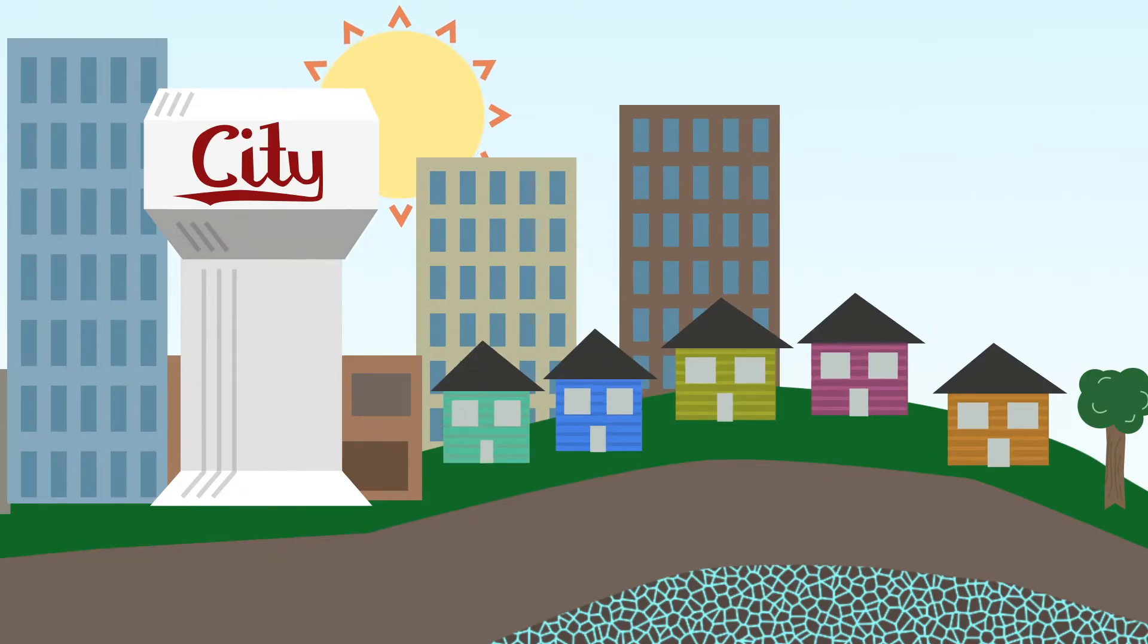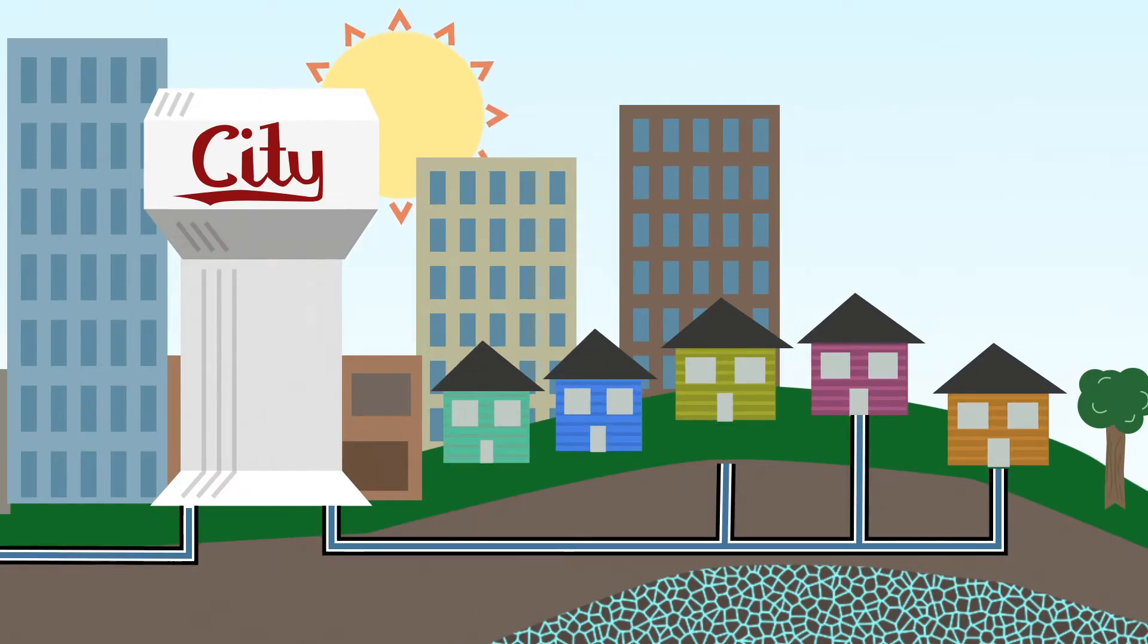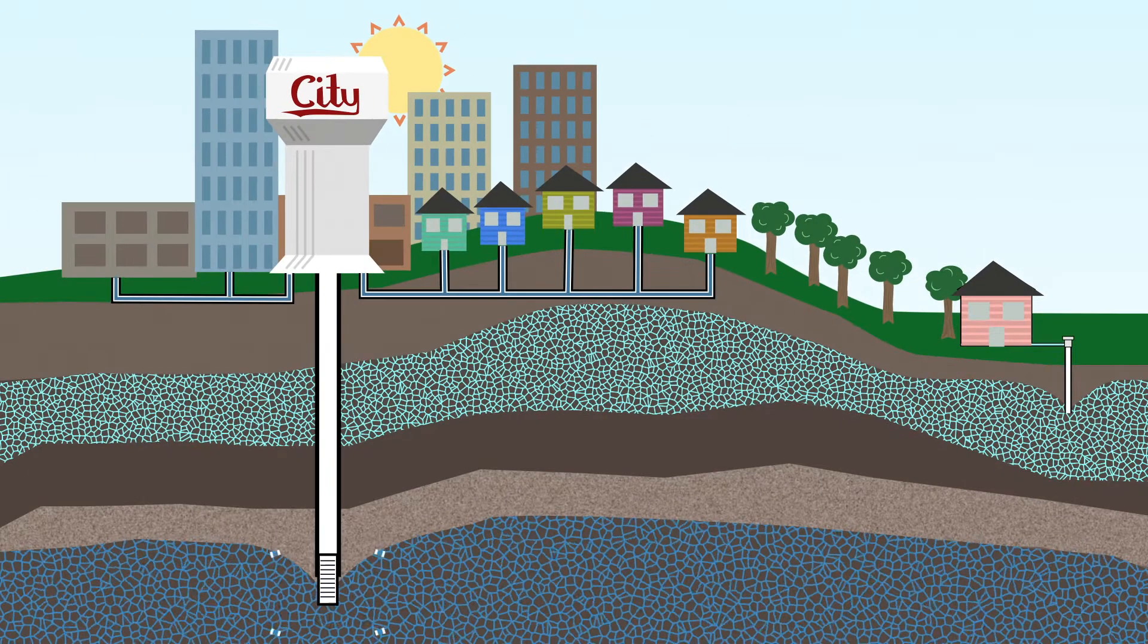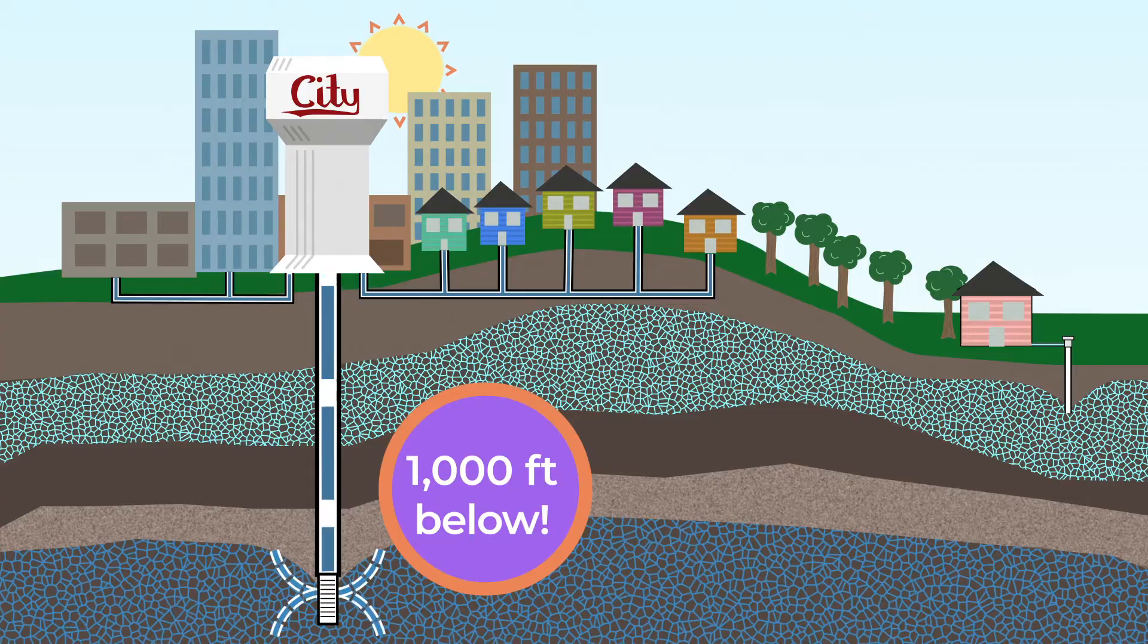Private well owners aren't the only ones who depend on groundwater. Many cities distribute water to their residents from deep city wells that suck water from around 1,000 feet below ground.